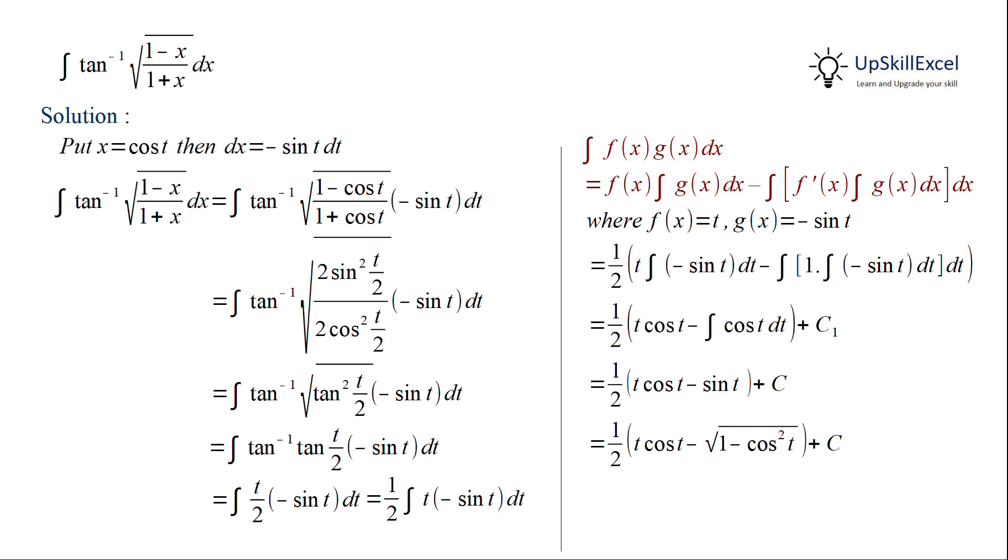We can write sin t as under root of 1 minus cos square t and then substitute t back in terms of x to get our result as half of x cos inverse x minus under root of 1 minus x square plus c.